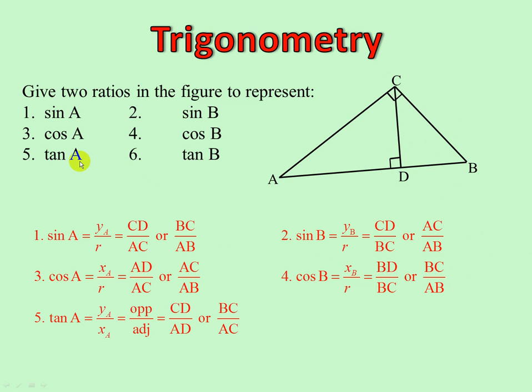Tan of A, small triangle, opposite over adjacent. CD over AD. In the big triangle, opposite over adjacent, BC over AC.